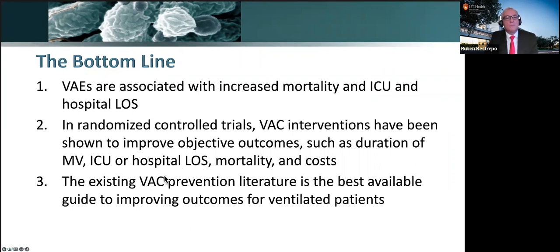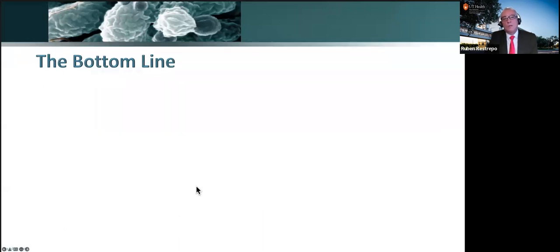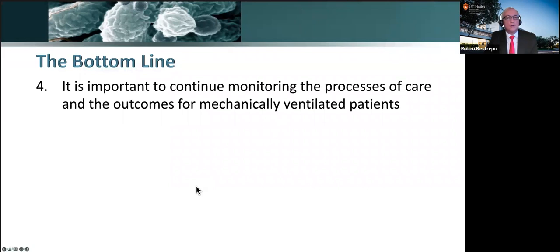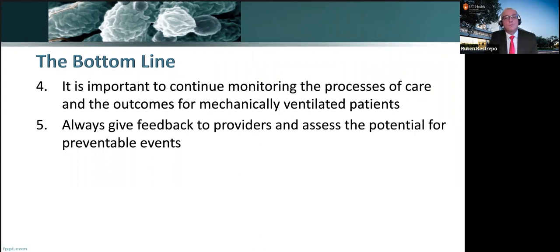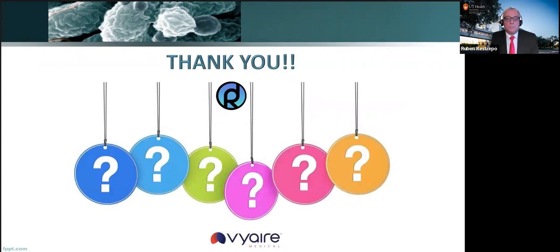In randomized controlled trials, VAE interventions have been shown to improve objective outcomes such as duration of mechanical ventilation, ICU or hospital length of stay, mortality, and cost. Everything you read about VAC, VAE, and particularly VAP prevention is probably the best guide to the type of outcomes you're looking for. It is important to continue monitoring the process of care and outcomes for mechanically ventilated patients, and always give feedback to providers and assess the potential for preventable events.